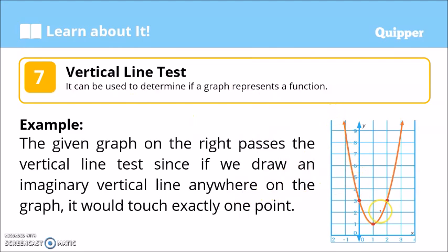So the vertical line test: when we have a graph like this, we draw an imaginary vertical line. Vertical line, right? We draw a vertical line anywhere on the graph. Anywhere on the graph. Imaginary only. If it touches the graph at one point only, at exactly one point, then the graph passes the vertical line test, meaning that graph represents a function.